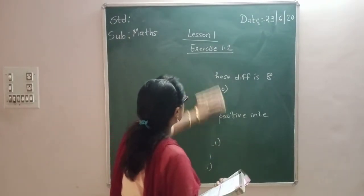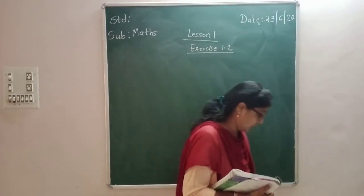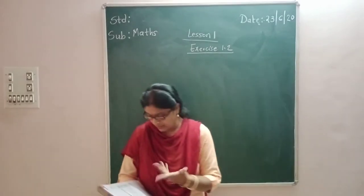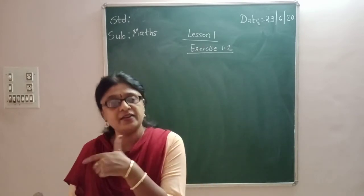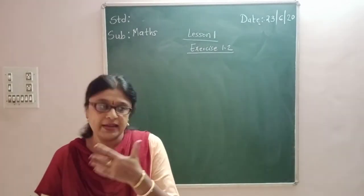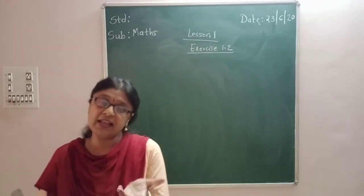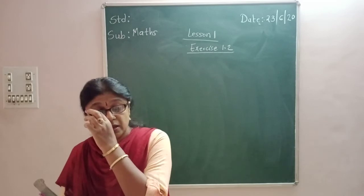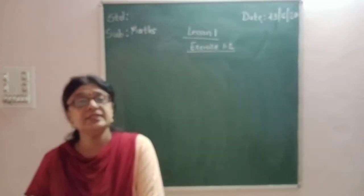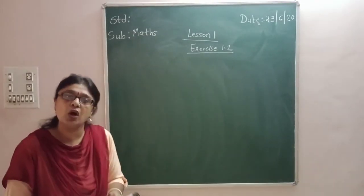Here the situation is given, so you have to solve according to the situation. If the situation is not given, as in question number 1, you are just told to write down two integers — it can be both negative, both positive, one negative and one positive — that you have to decide. But in question number 2, the situation is given to you, so you have to solve according to the situation.